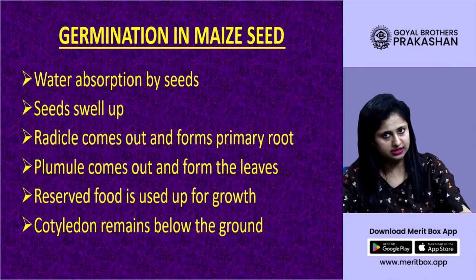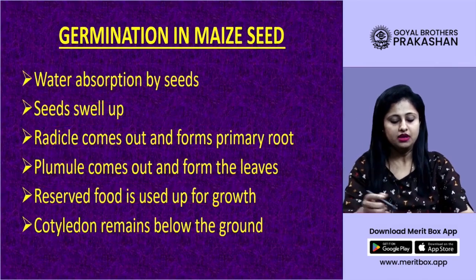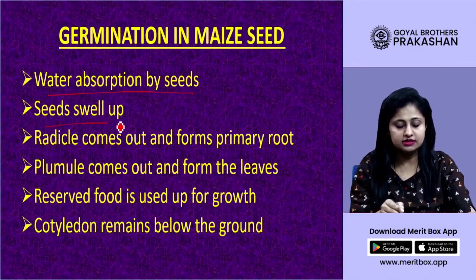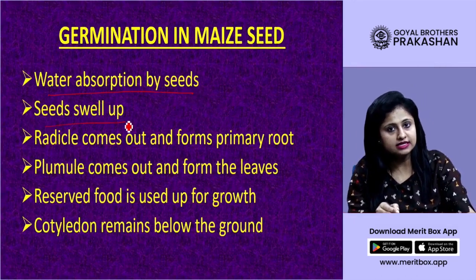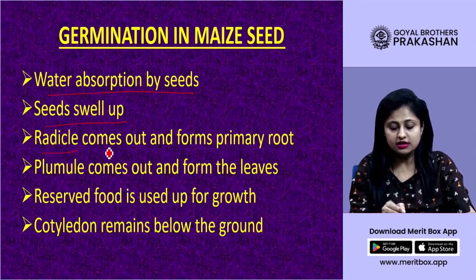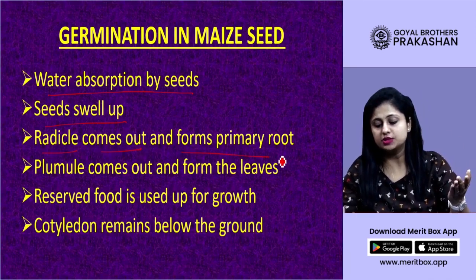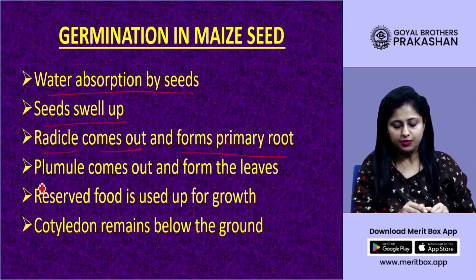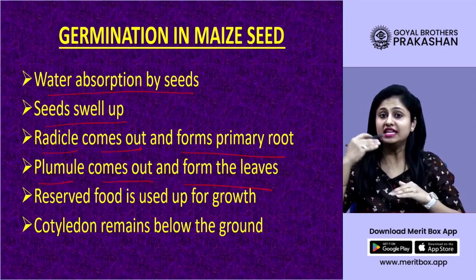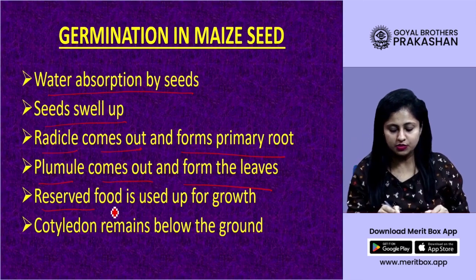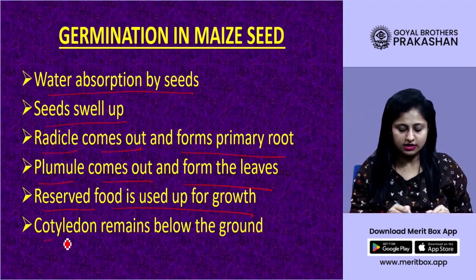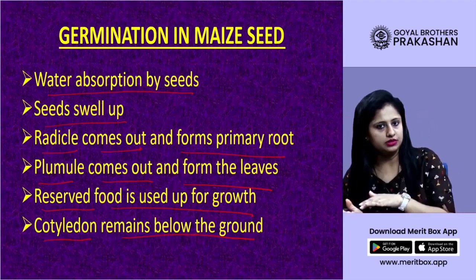Germination in a maize seed: water is absorbed by the seed and it swells. The radicle comes out and forms the primary root. The plumule comes out and forms the leaves. Reserved food is used for growth and the cotyledon remains below the ground.